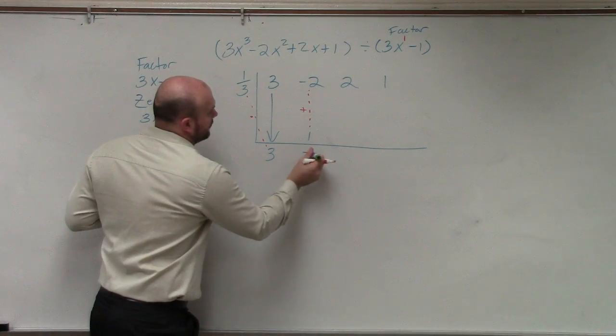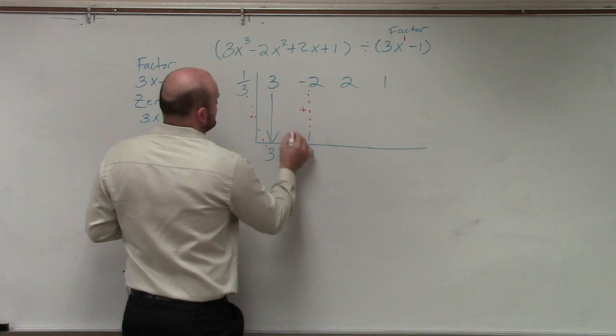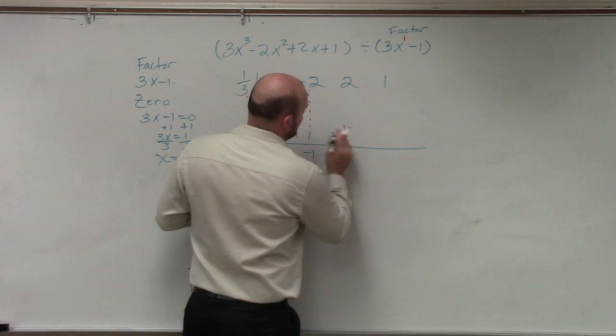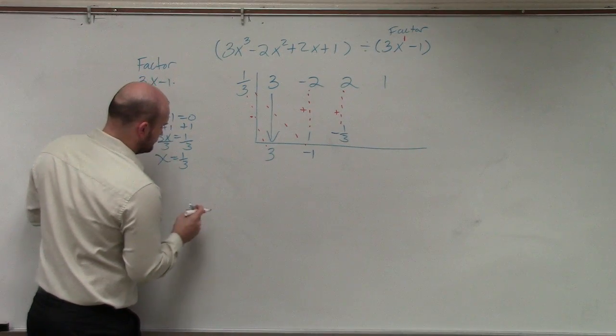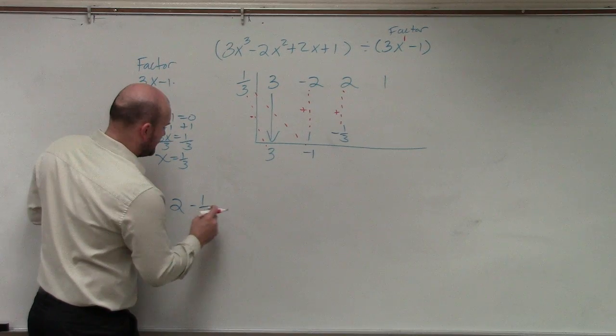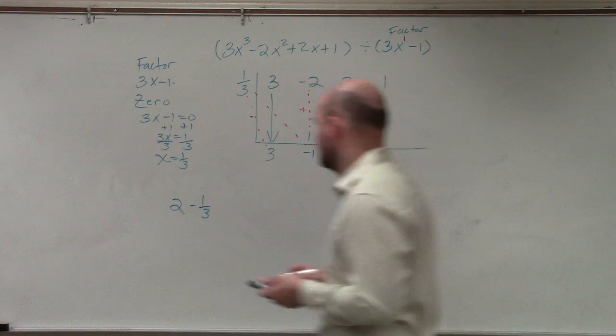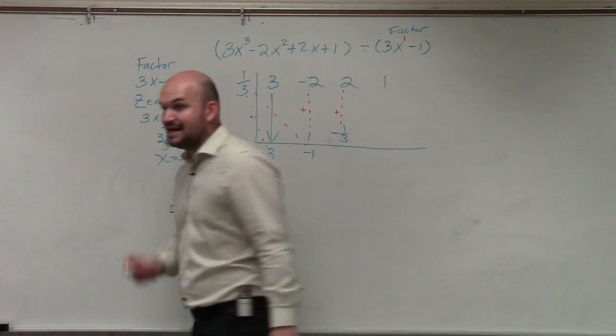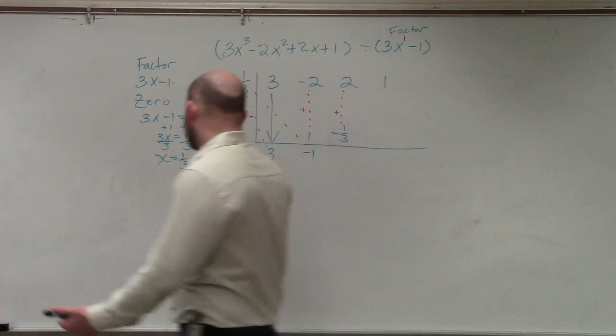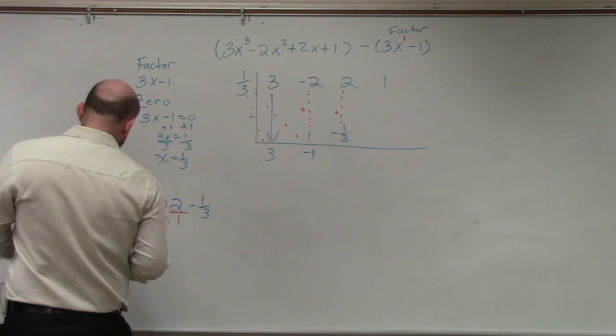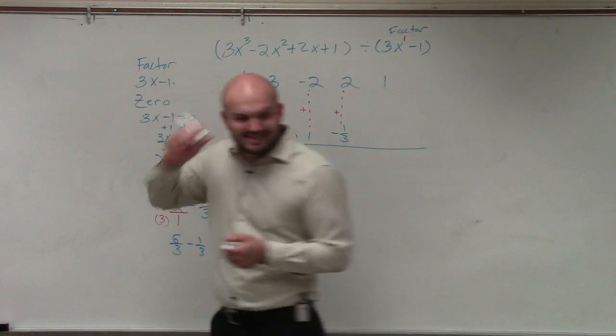So you add negative 2 plus 1 is negative 1. Negative 1 times 1 third is negative 1 third. So you multiply on your diagonal, that becomes negative 1 third. Add on the vertical. So ladies and gentlemen, what is 2 minus 1 third? Well, first of all, you cannot subtract a whole number from a fraction unless the denominators are exactly the same. So first thing I need to do is get common denominators. So instead of writing 2, I need to rewrite 2 in terms of a denominator of 3. So what I could do is multiply by 3 over 3.